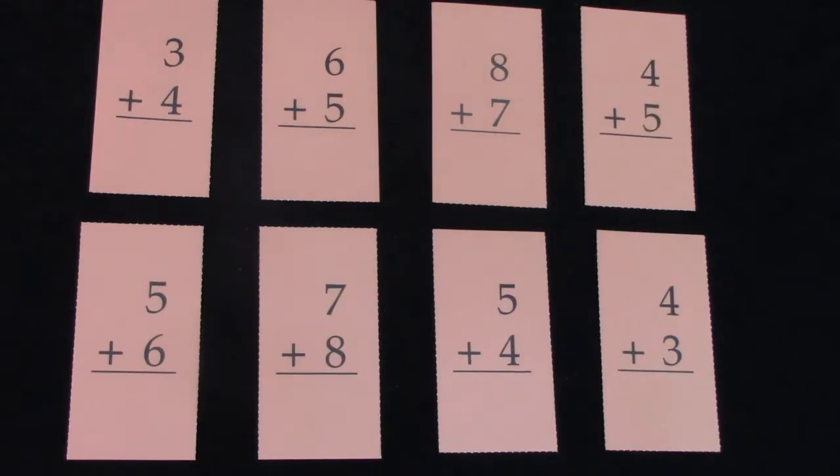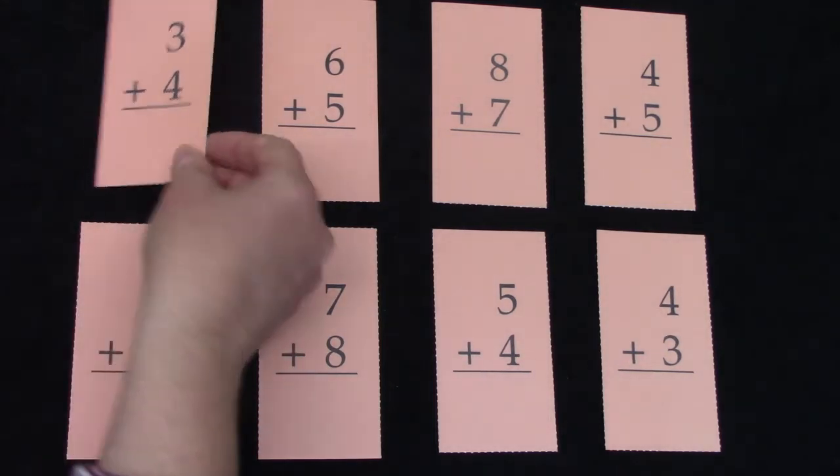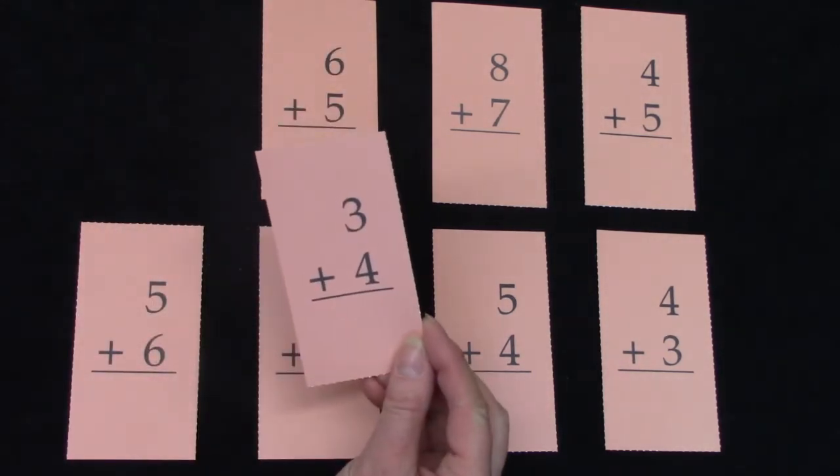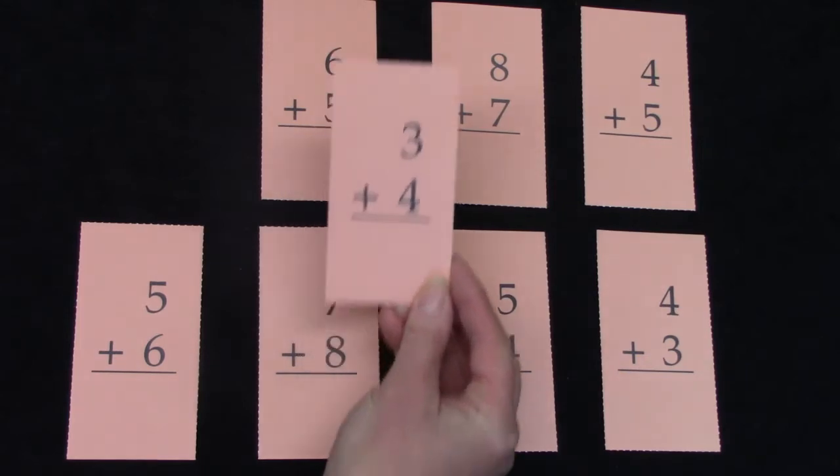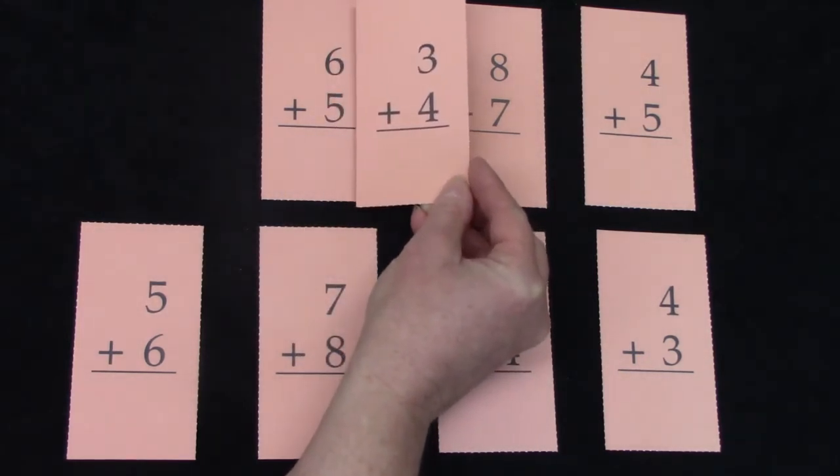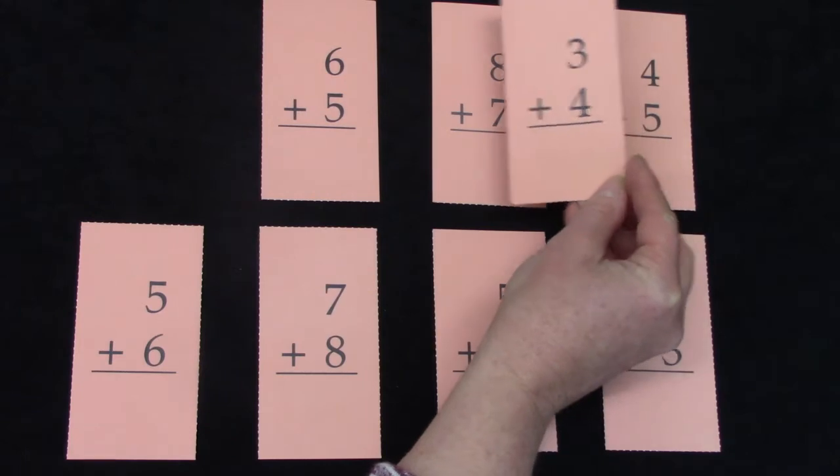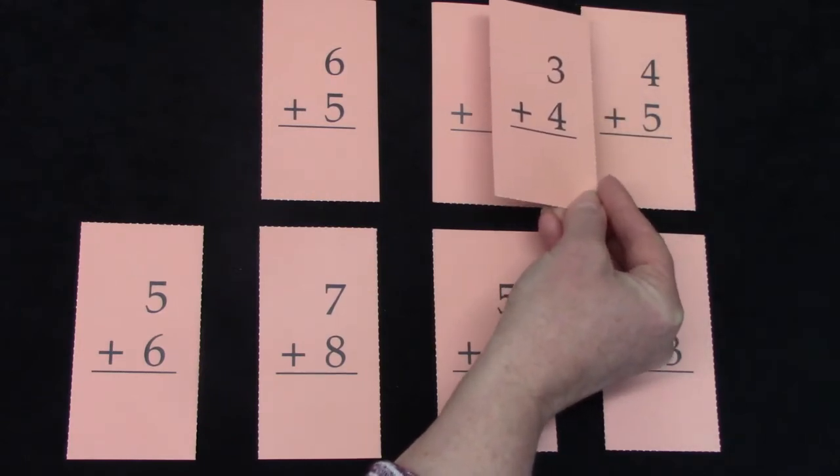We're going to take a look at some of these double plus one facts. As you're looking at them, some of them might seem very similar because these are switcheroo facts. This one says 3 plus 4. Do you see a fact that looks very similar to it? Not 6 plus 5, or 8 plus 7, or 4 plus 5.